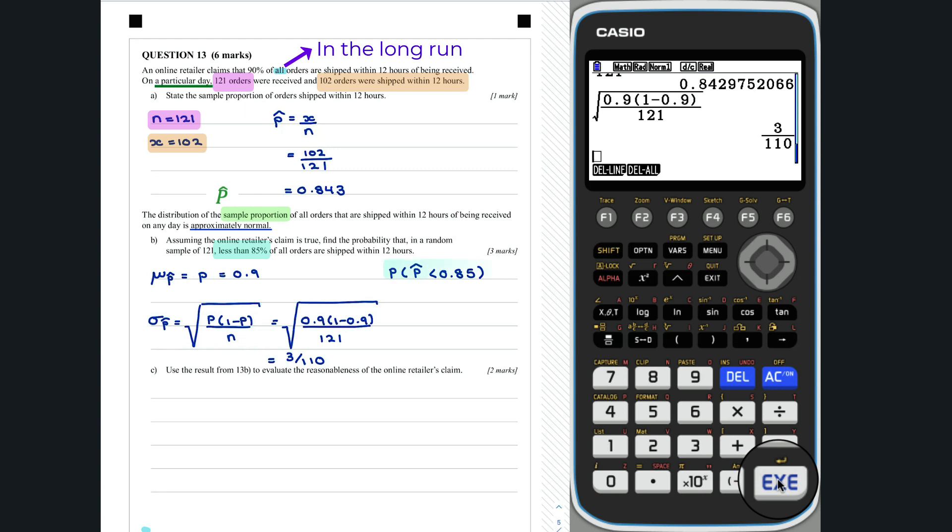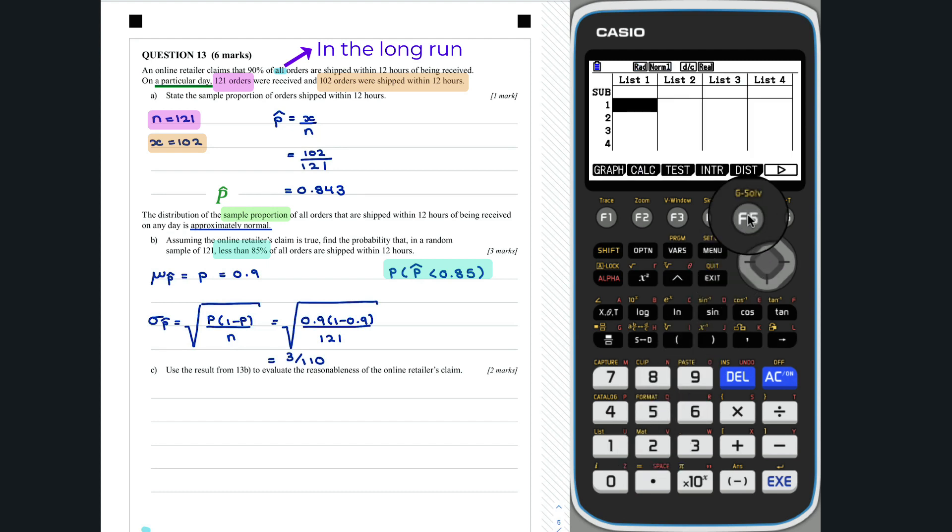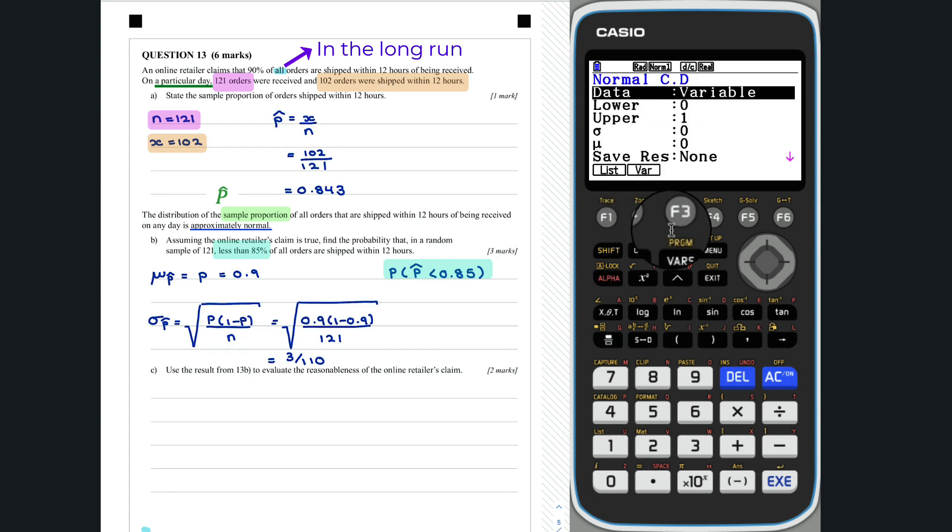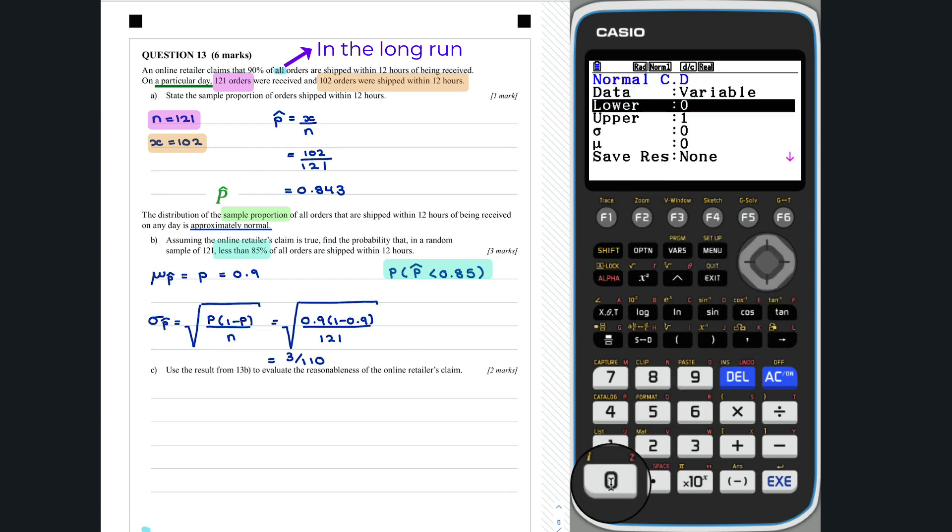This can be evaluated in the statistics mode. We need to calculate a cumulative probability, so we will use ncd. Entering in our values. Thus, the probability that capital p hat is less than 0.85 is 0.033.